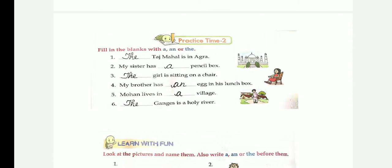So here, first question is dash Taj Mahal is in Agra. Answer, the Taj Mahal, a name of famous building, right? Second one, my sister has dash pencil box, a pencil box. The girl is sitting on a chair. My brother has an egg in his lunch box. An egg, E vowel, egg, first letter is E, so we use 'an'.